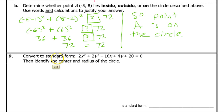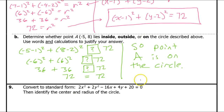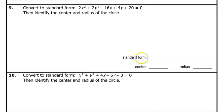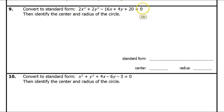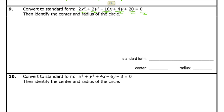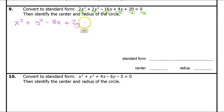Now let's convert to standard form. Standard form is the form with parentheses. The first thing to do is divide everything by 2 — I don't want numbers in front of my x squared and y squared, and luckily everything is divisible by 2. Dividing everything by 2 gives us x squared plus y squared minus 8x plus 2y plus 10 equals 0.